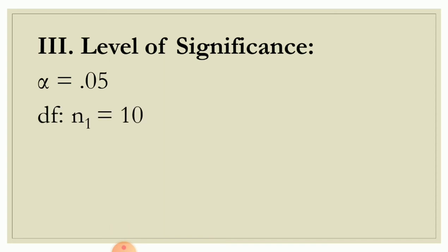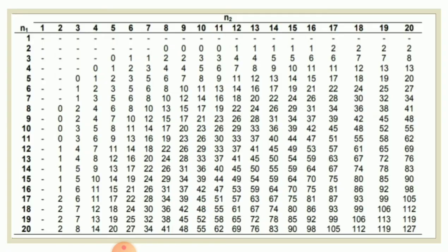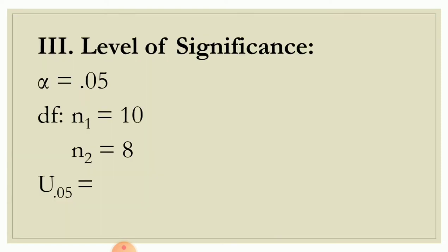For the degrees of freedom, N sub 1 for group 1 is 10, and N sub 2 for group 2 is 8. Then get the U tabular value at 0.05 using the U table. On the leftmost part of the table we have the degrees of freedom for N sub 1, and on the upper part we have the degrees of freedom for N sub 2. For N sub 1 equal to 10 and N sub 2 equal to 8, their intersection is 17. Therefore, the U tabular value at 0.05 is equal to 17.